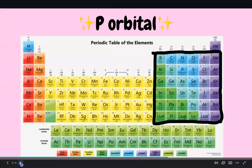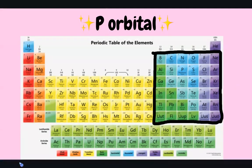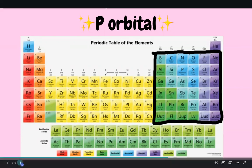Next, we have the P orbital or the P block. These elements consist of the semi-metals, non-metals, halogens, and noble gases. Most of the elements in this category form covalent compounds with other elements and they lose their electrons easily.